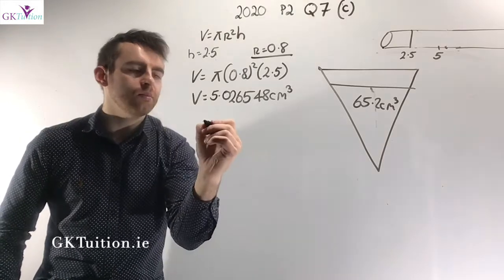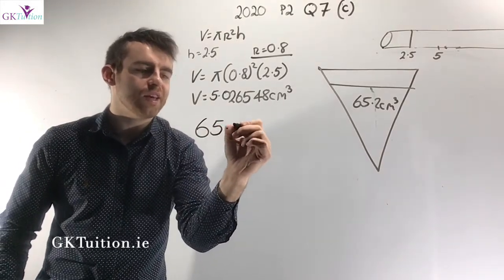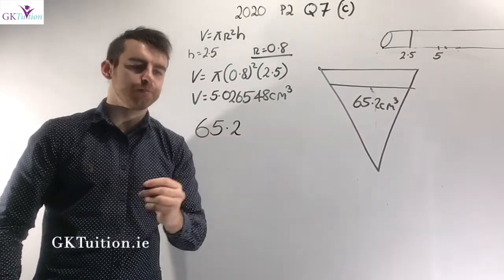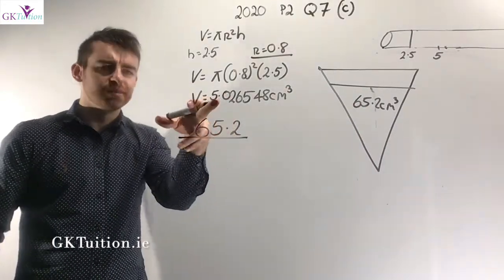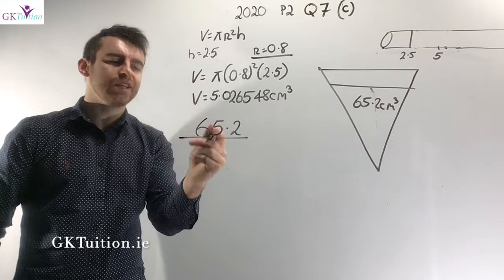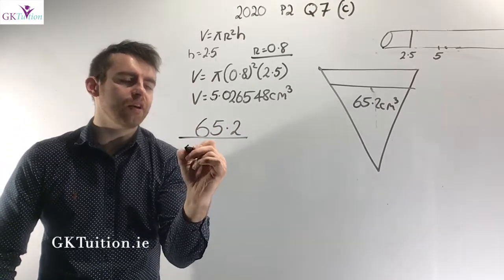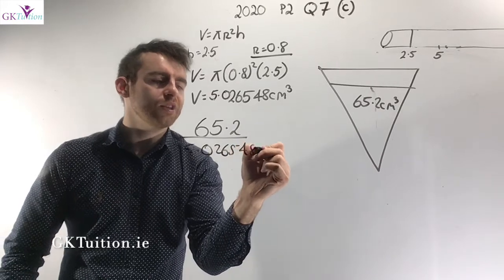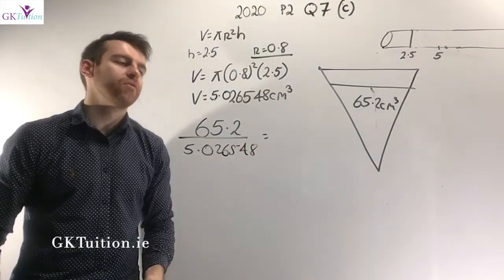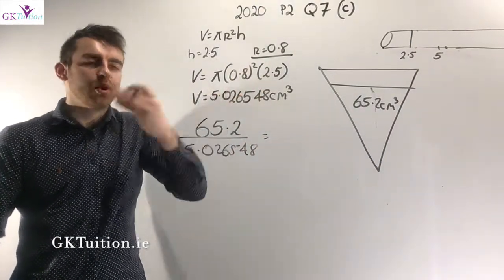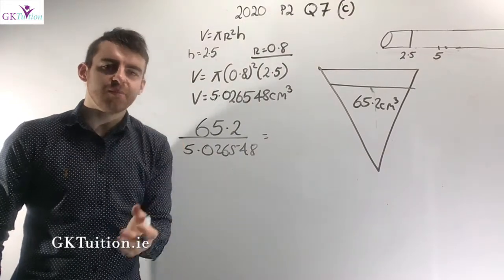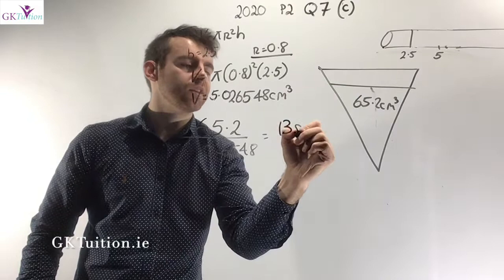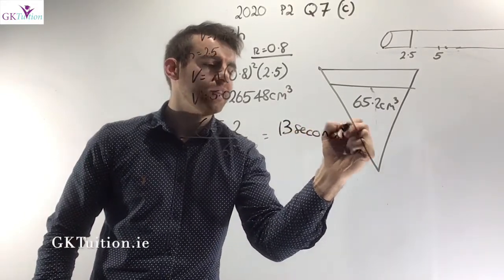I know the volume needed is 65.2 cm cubed, and 5.026548 cm cubed flows in each second. So 65.2 divided by 5.026548 tells me how long it takes to fill the cone to point F. To the nearest second, the answer works out as 13 seconds — that's the final answer for part c.